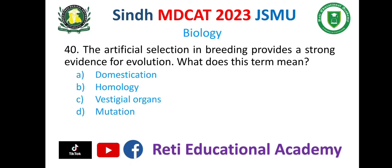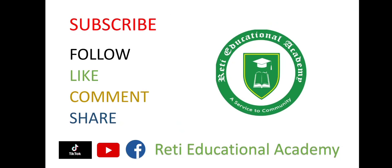Question number 40. Artificial selection in breeding provides strong evidence for evolution. What does this term mean? A. Domestication, B. Homology, C. Vestigial organ, D. Mutation. The correct option is A. Domestication. Subscribe to Rethi Educational Academy and follow us on TikTok and Facebook.